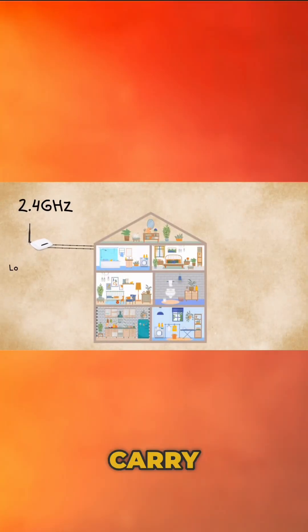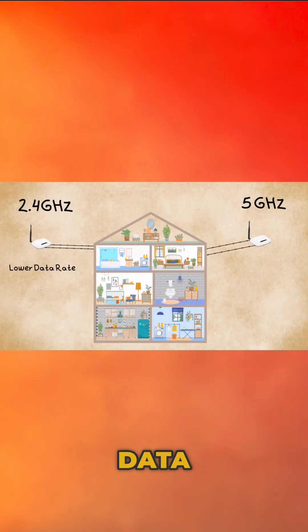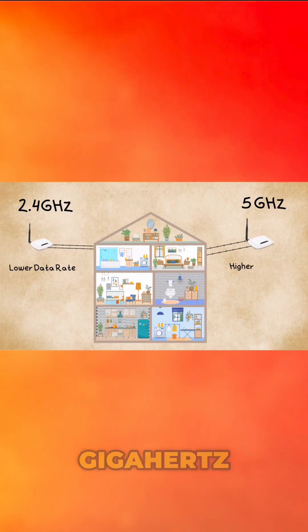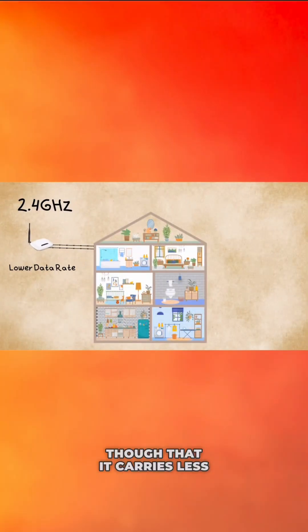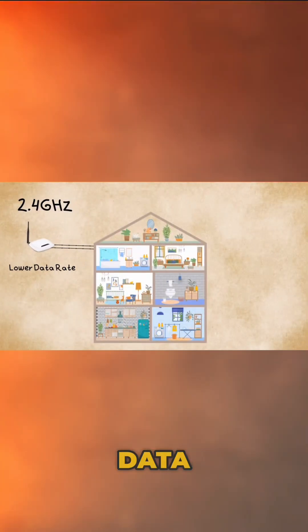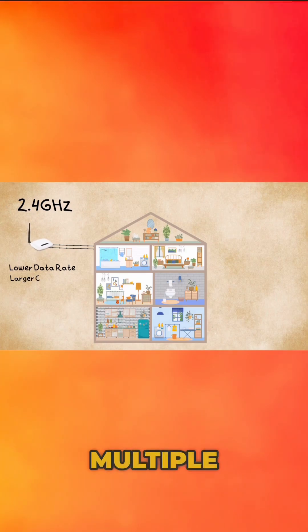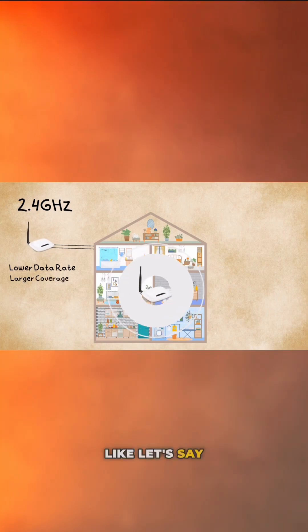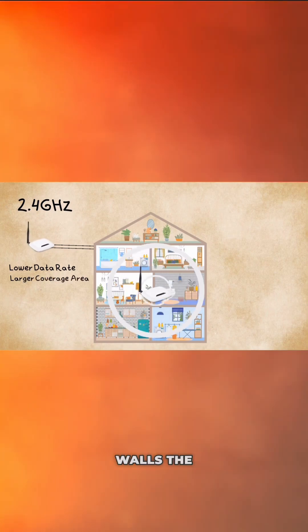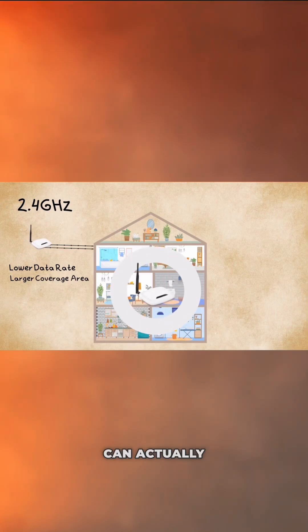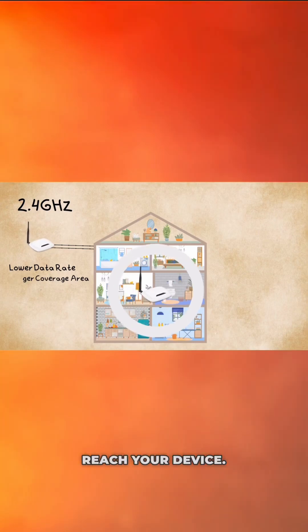2.4 gigahertz frequencies can carry only a limited amount of data, while 5 gigahertz can carry a lot more. We can be quick to judge that 5 gigahertz is better, but 2.4 gigahertz, though it carries less data, can actually transmit through multiple obstacles — like if you're two rooms apart or have different walls, the data can slide through all of them to reach your device.